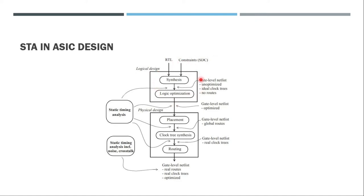At these logic design stages, the zero wire load model is mostly used, where no load is considered on the cell. At the physical design phase, once placement is carried out, STA can also be performed. At that point, the wire length of the interconnect is known, so RC values can be estimated — but it is still pessimistic without full resistance and capacitance details. Also, after placement the clock tree is not yet built, so the clock is considered ideal at this stage. This STA is better than the logic design STA since we know the real placement of cells.